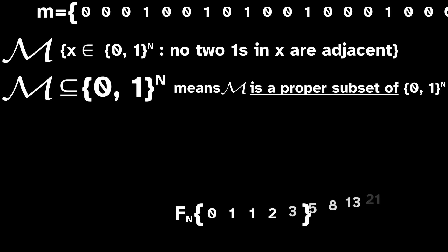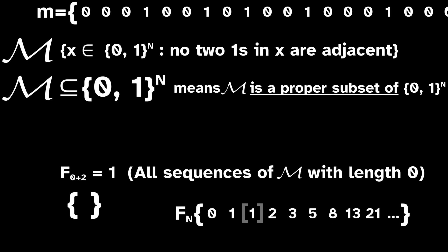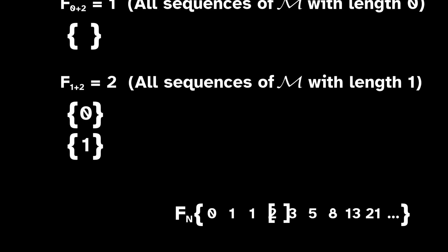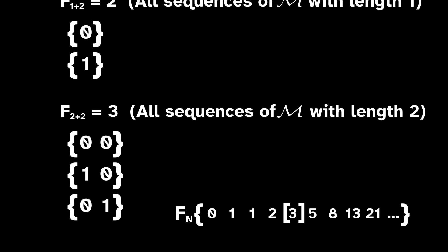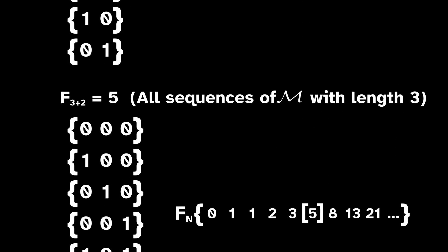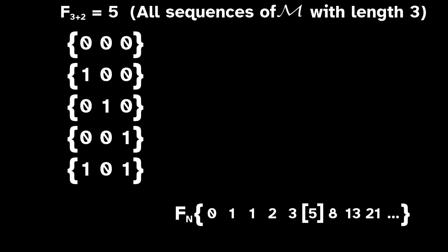The subshift M is called the golden mean shift because the number of sequences of length N satisfying its rules are equal to sequential Fibonacci numbers. This is just one example of a rule generating a subshift. There are a lot of rules you could make up. How about this one?